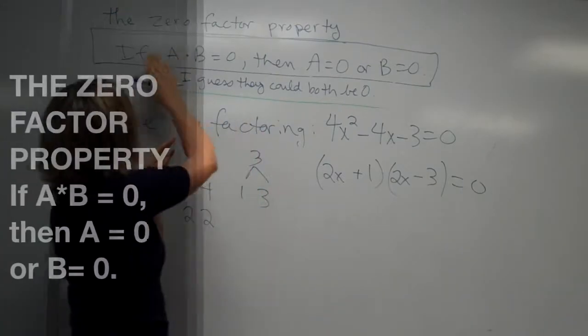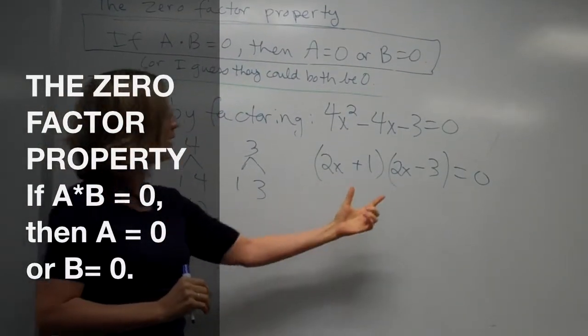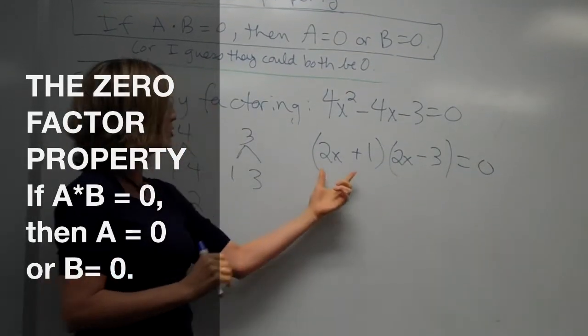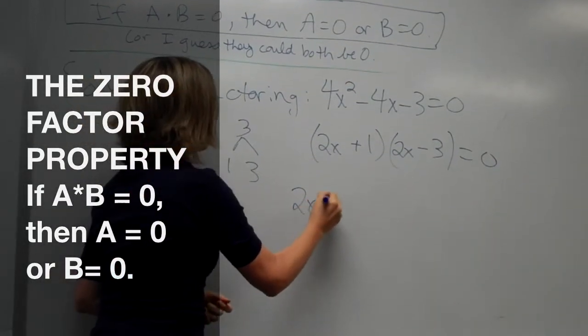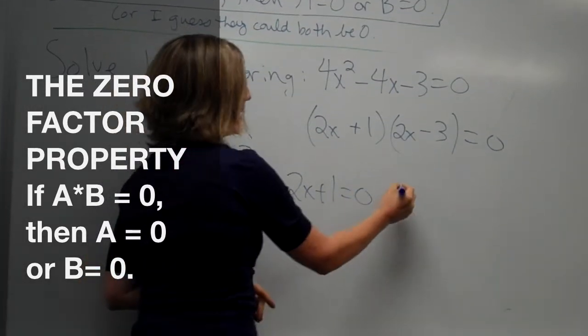All right, now let's use the zero factor property. So since 2x plus 1 times 2x minus 3 is equal to zero, either 2x plus 1 is zero, or 2x minus 3 is zero. Or I guess they could both be zero.